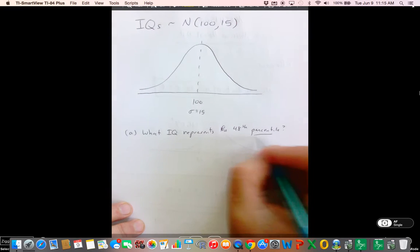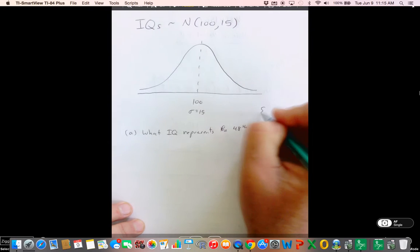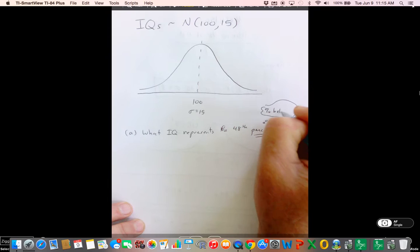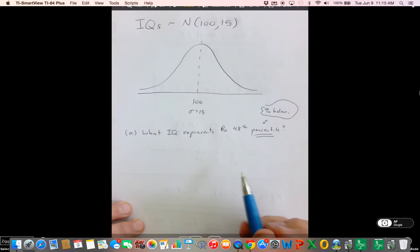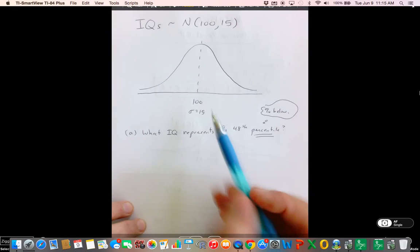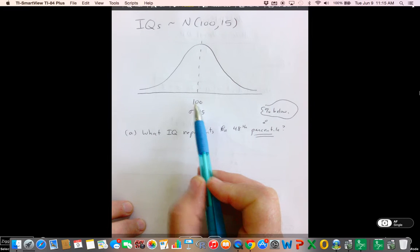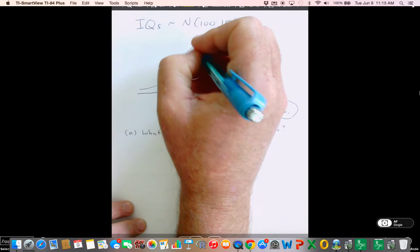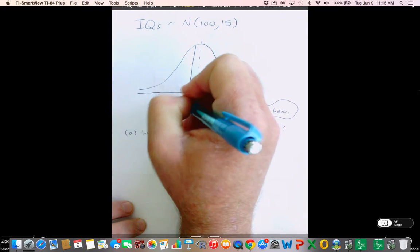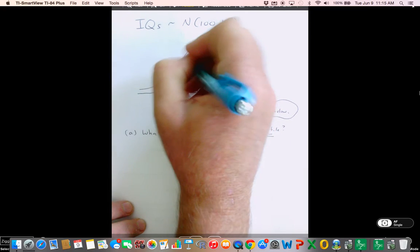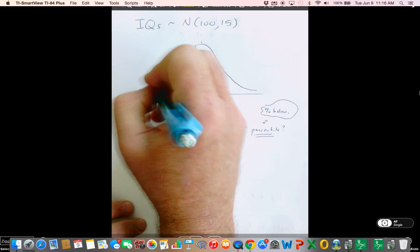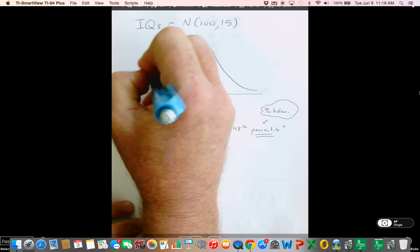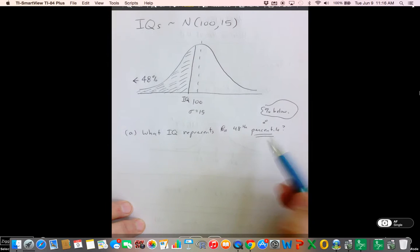Now, you've got to think back to the definition of percentile, which I covered in a previous video. Percentile is just what? Percent below. So we can use a little bit of educated knowledge here, and we can say, well, we know that 100 is at the 50th percentile, because 100, the mean in any normal distribution, splits it into two equal parts, because we have perfect symmetry. So we know that there must be some IQ score right here that has 48 percent of the IQs below it. Again, because percentile, by definition, is percent below, and we're looking at the IQ score, which we don't know, that has 48 percent of the scores below it.